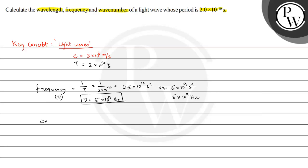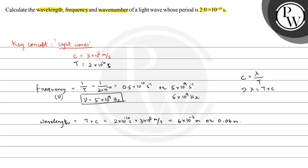Now we have to calculate the wavelength. We know that velocity is equal to wavelength by time period, so wavelength will be time period multiplied by velocity. That means 2 into 10 raised to the power minus 10 seconds multiplied by 3 into 10 to the power 8 meters per second, which gives us 6 multiplied by 10 raised to the power minus 2 meters, or 0.06 meters. So lambda is equal to 0.06 meters.